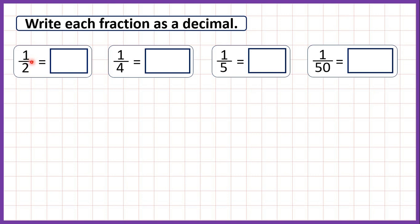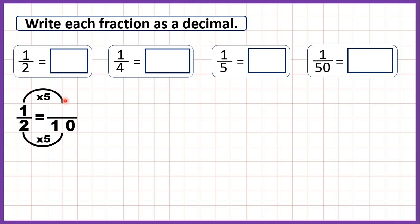For the first question, we can find an equivalent fraction to one half which has a denominator of ten. We use multiplication to find equivalent fractions. Two times five is ten, and what we do to the denominator we do to the numerator as well — one times five is five. So one half is equivalent to five tenths, and since the first digit after the decimal point is the tenths digit, we write one half as 0.5.